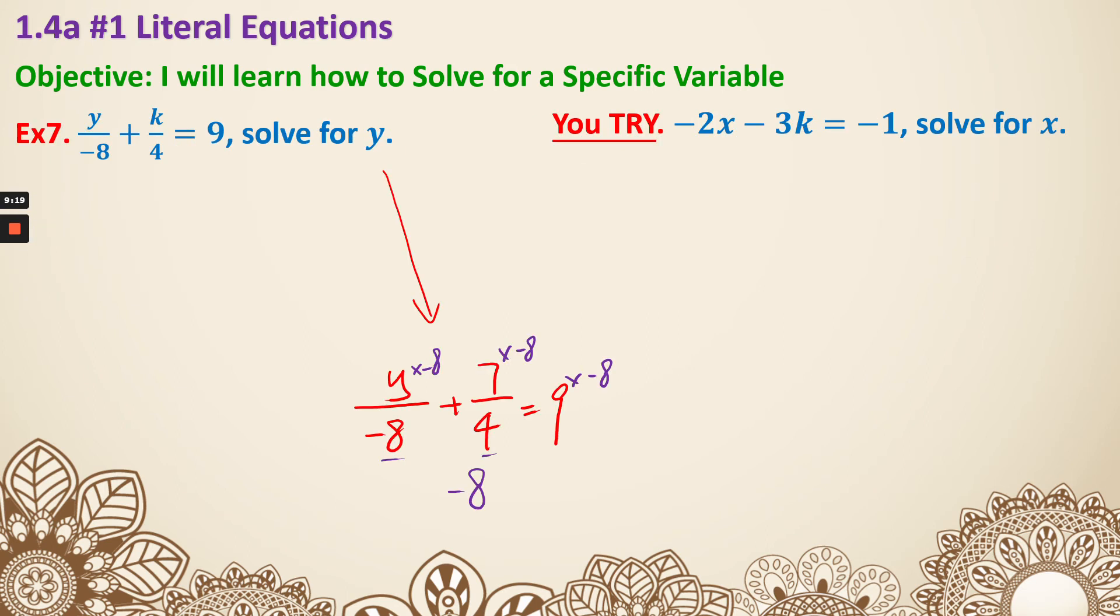So for this example 7, even if I change the 7 into a k, that doesn't change anything. I'm still just solving for y. You can totally treat the k exactly the same as the 7. So that means I will have the same first step. Multiply by -8 of every single thing.